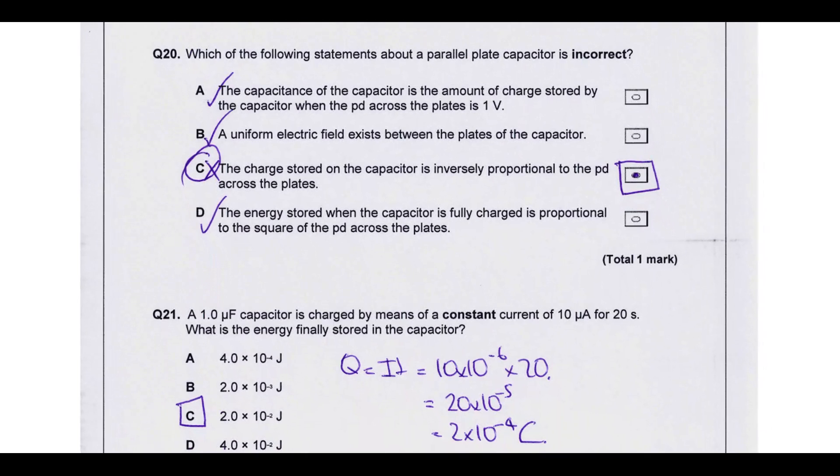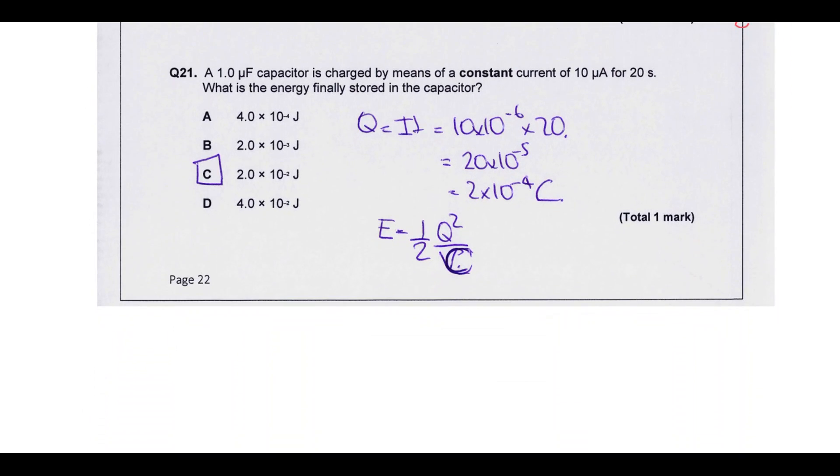Which one of the following statements about a parallel plate capacitor is incorrect? Capacitance is the amount of charge stored when the PD across the plate is one volt. Yes, that's absolutely true. That's almost the definition of capacitance. A uniform electric field exists between the plates. Yes, we've got two parallel plates with charges on them. That's going to be a uniform field. Charge on the capacitor is inversely proportional to the PD across the plates. No, we saw from the question above that they're directly proportional to each other. So that's wrong. So that's going to be that one. The energy stored when the capacitor is fully charged is proportional to the square of the PD. Absolutely it is. Half CV squared is the form we're interested in. So we can see that's true. So it's going to be C.